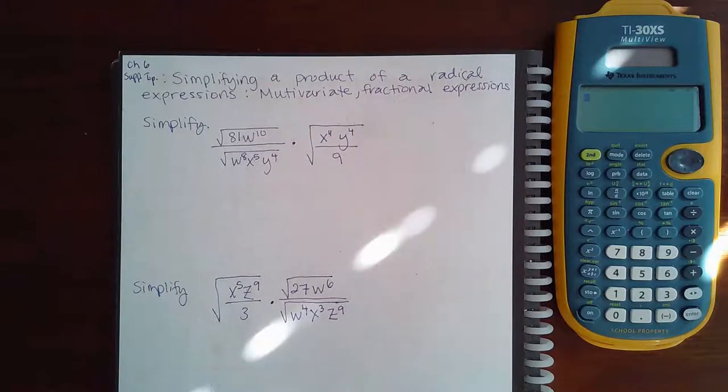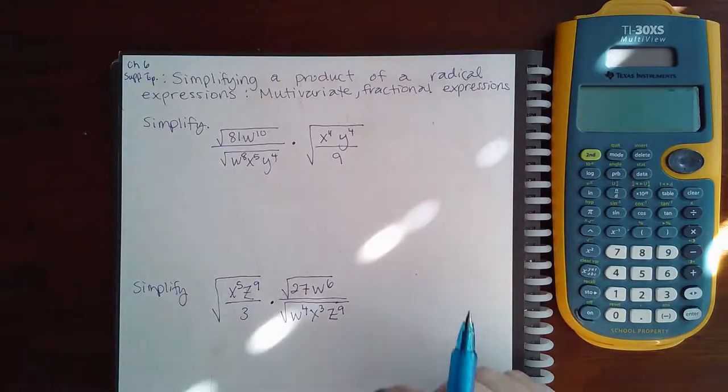Here we have a chapter six supplementary topic: simplifying a product of radical expressions with multivariant and fractional expressions. Essentially, what we want to do is multiply everything together, reduce what's inside the square root first, and then see what will come out of the square root. That's the best way to attack this.